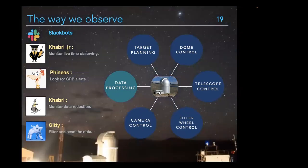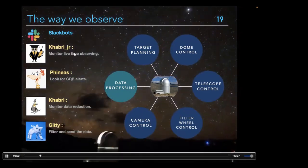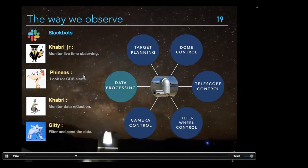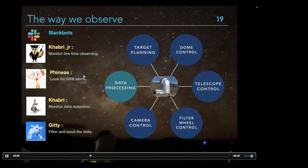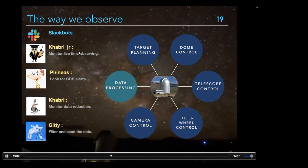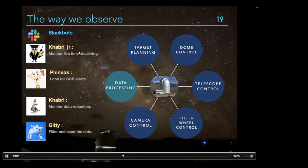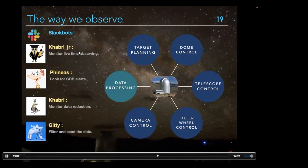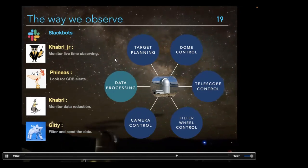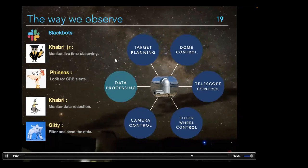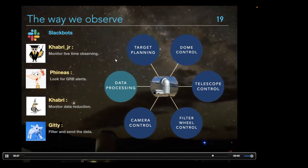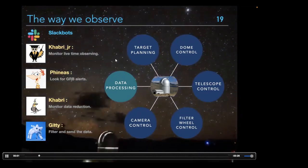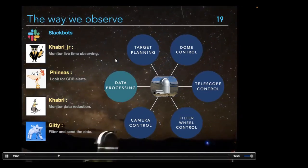We've also integrated Slack bots which monitor the system — no human monitoring required overnight. Different bots serve different purposes: monitoring alerts and incoming triggers, handling data detection, monitoring live observations, solving problems in real time, and alerting humans when it encounters an error it cannot solve. This makes operations as robotic as possible.